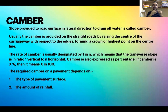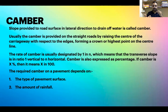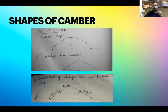Camber is represented as 1 in N — meaning one vertical to N horizontal. For example, one in 20 means for 20 meters horizontal there will be 1 meter rise in vertical. It can also be represented as a percentage — 5% means five in hundred, which is the same as one in twenty. Camber depends on two important aspects: the type of pavement surface and the amount of rainfall.